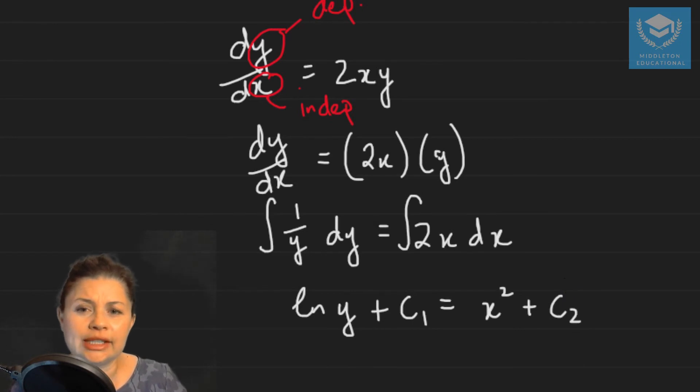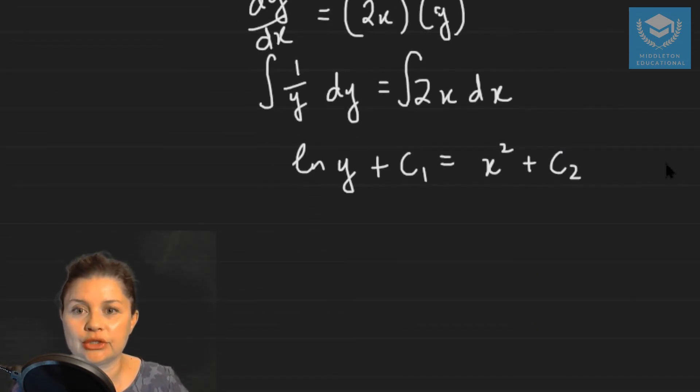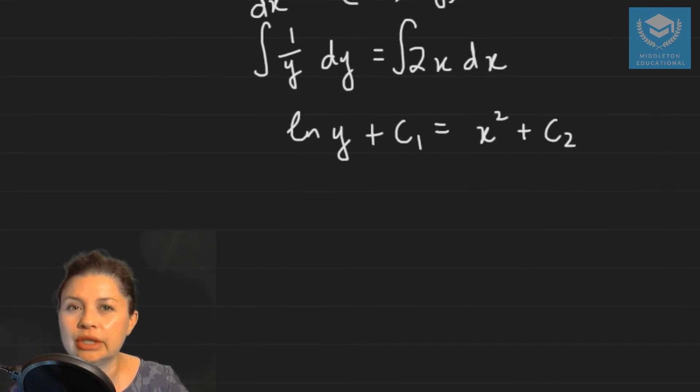Now you'll see that I've added in a constant on both sides of the equation. But I want to show you that you don't actually have to do this. I can now write ln y is equal to x squared plus c2 minus c1.